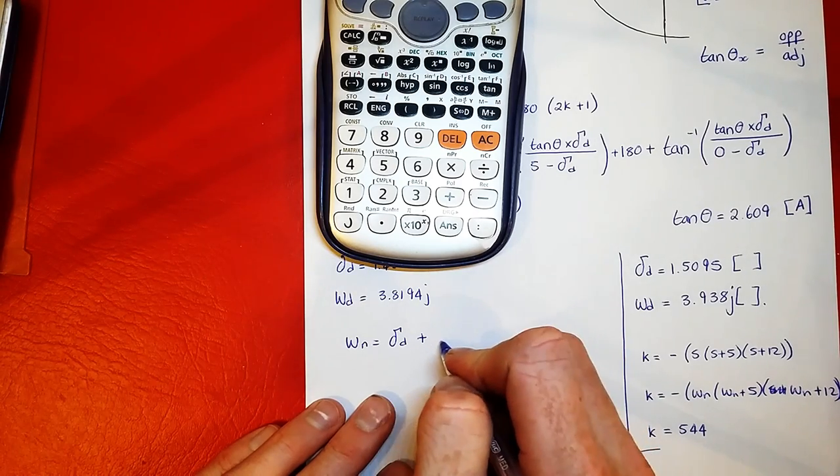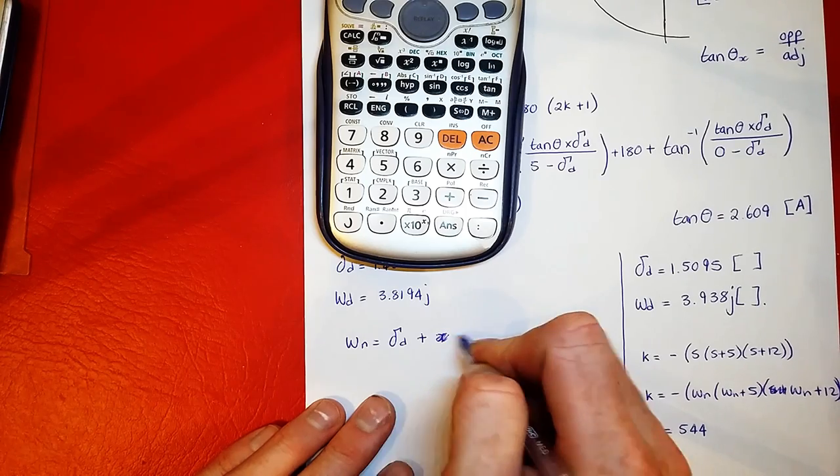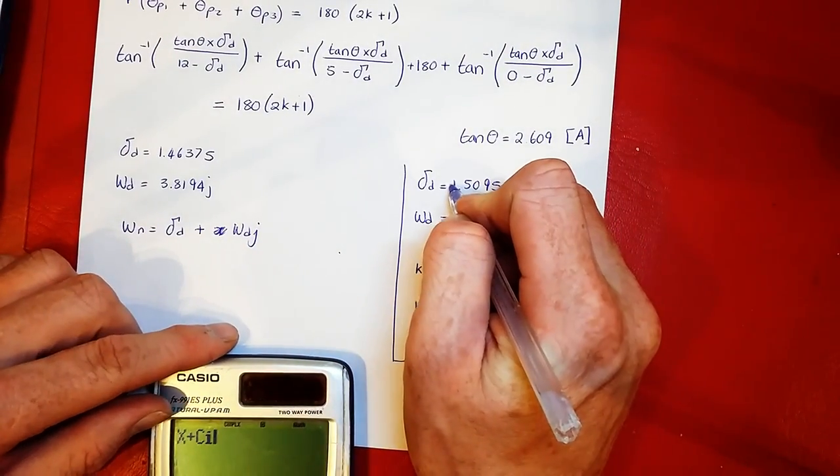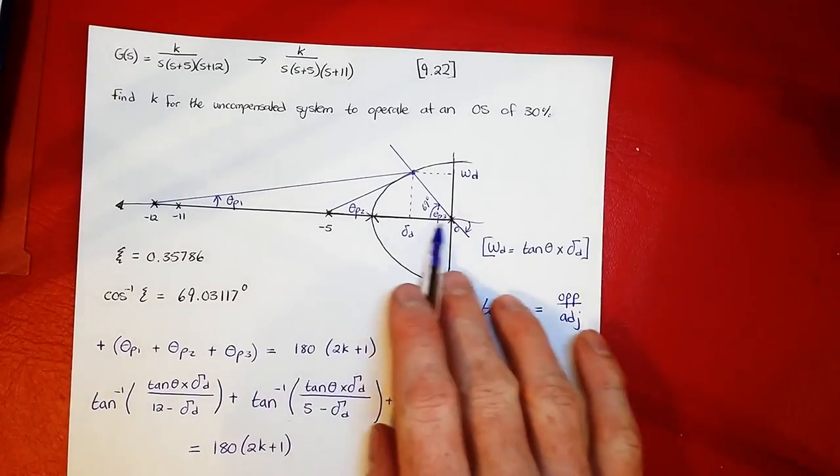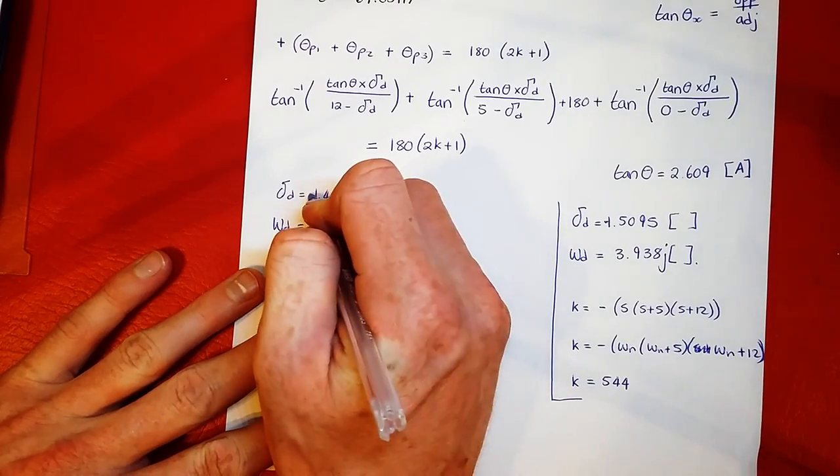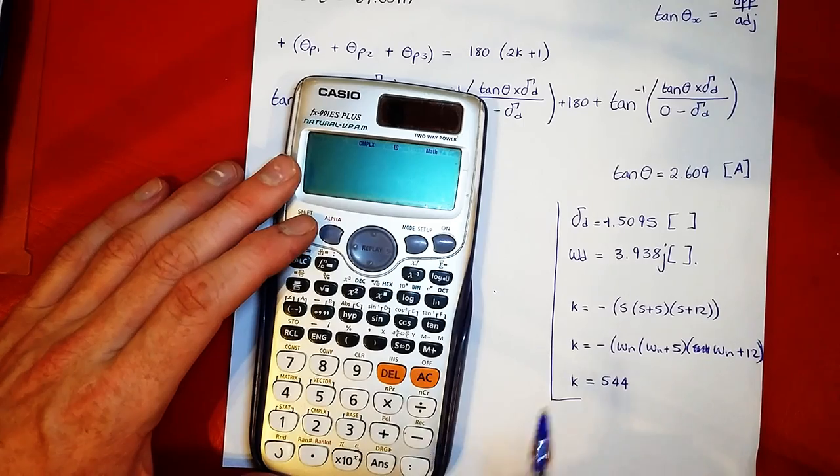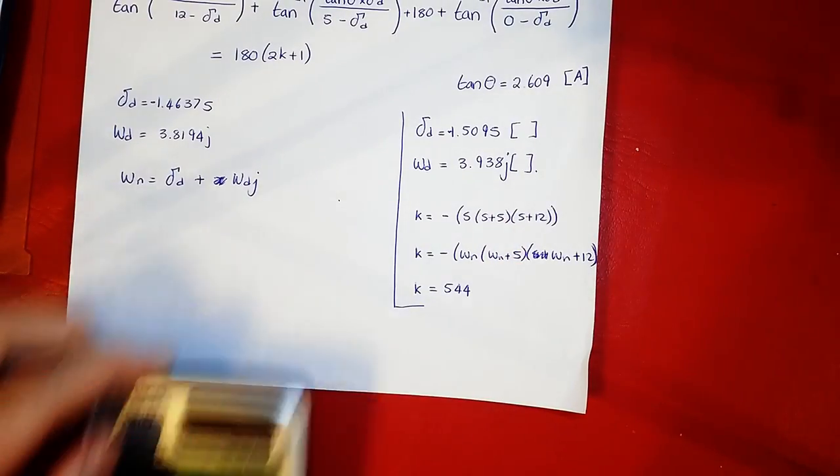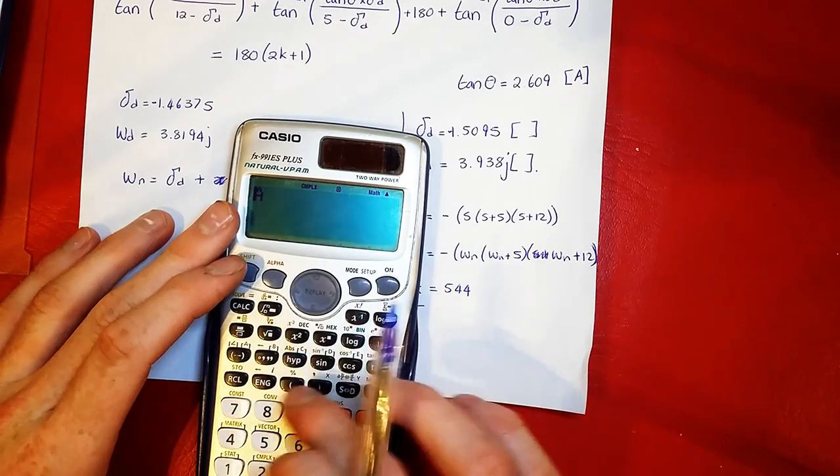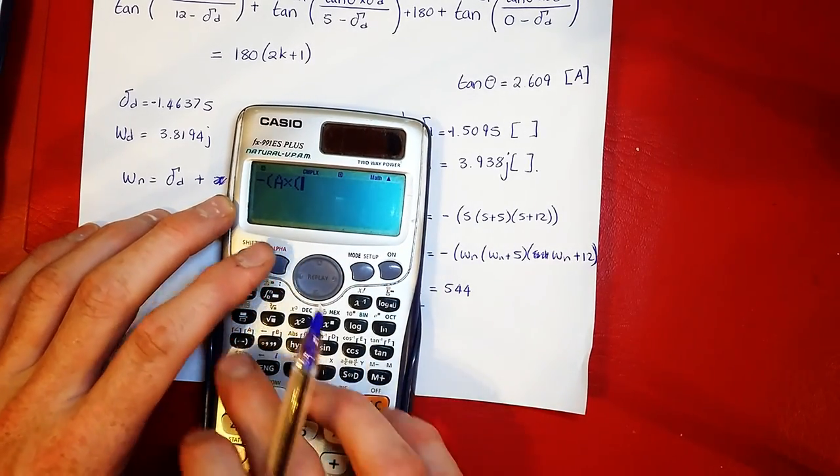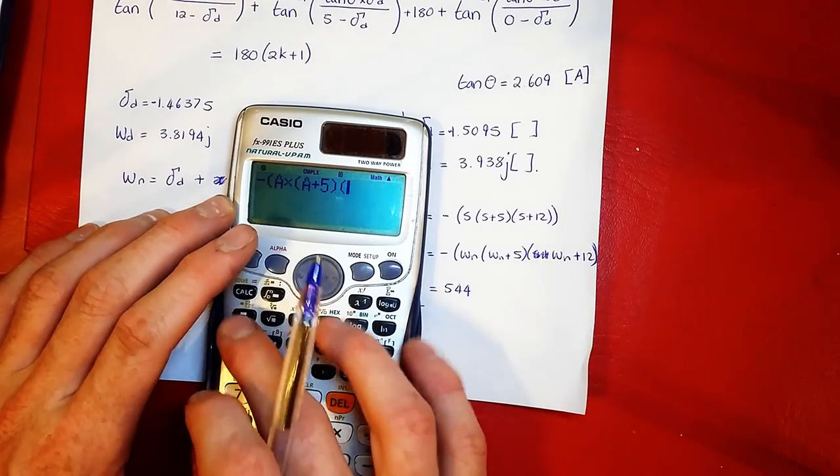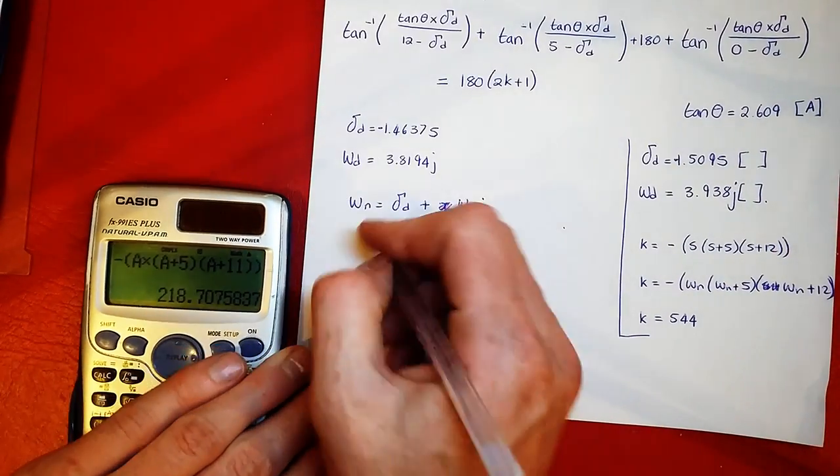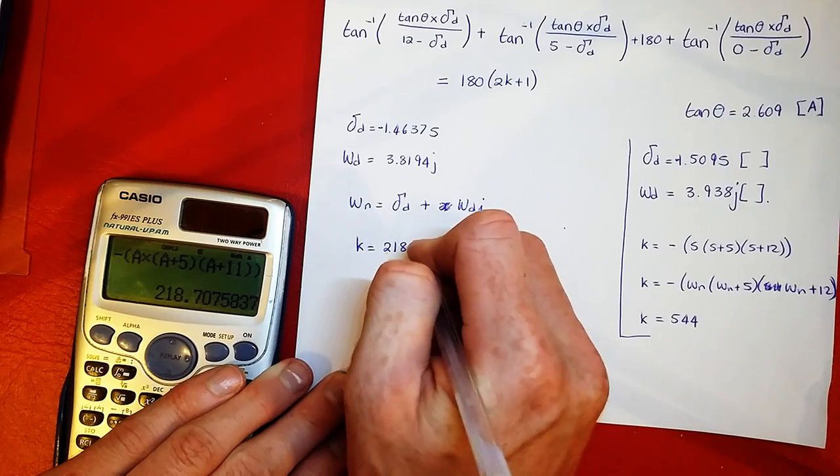We're going into complex mode. Omega N is x plus C i. Oh, I seem to have made a mistake here. Just remember your sigma d there is a negative because you're working all this way down the line. So this value is a negative there. Let's just put that in. So we're going to store that as a. Now doing exactly what we did before to solve for the k value: negative a multiplied by a plus 5 times a plus 11. We get 218, so k must equal 218.71.